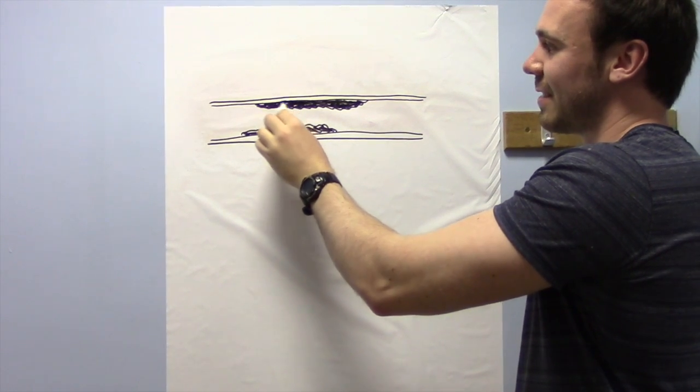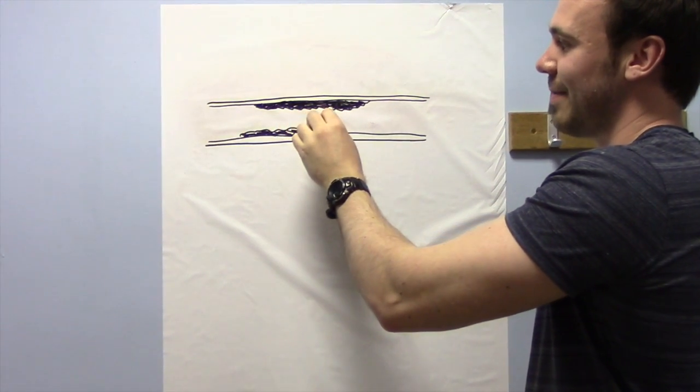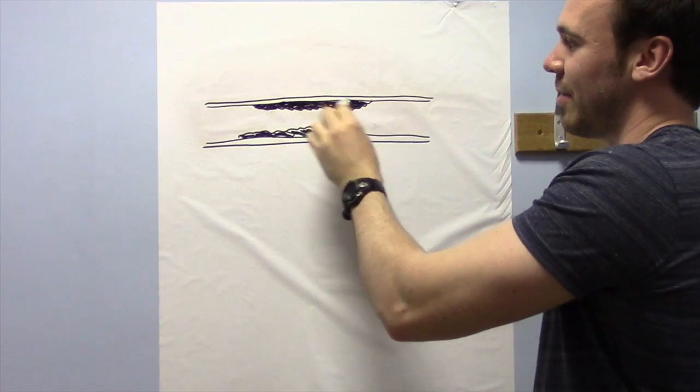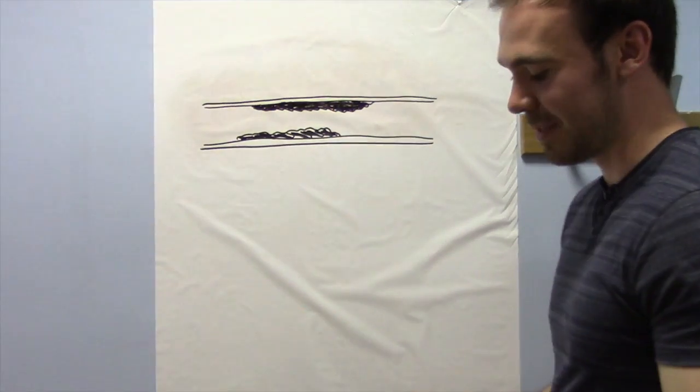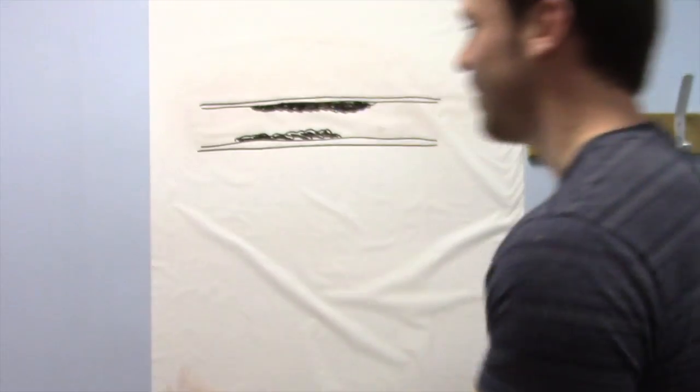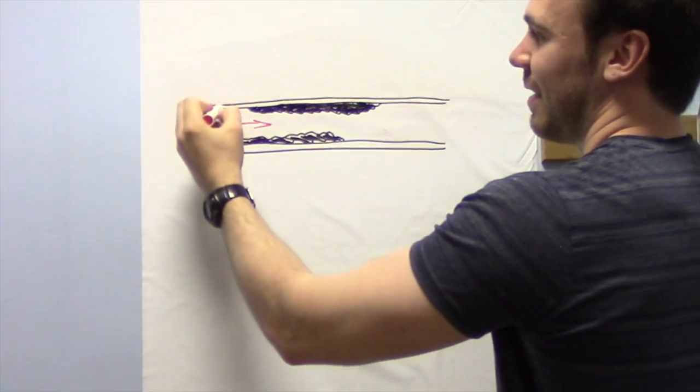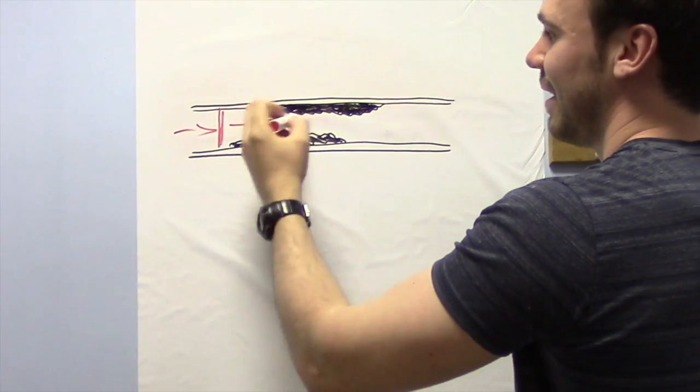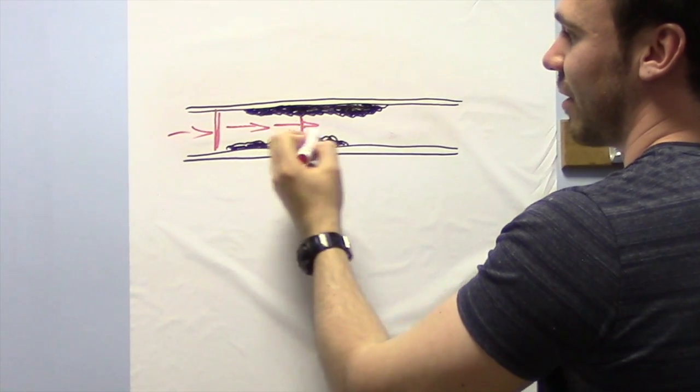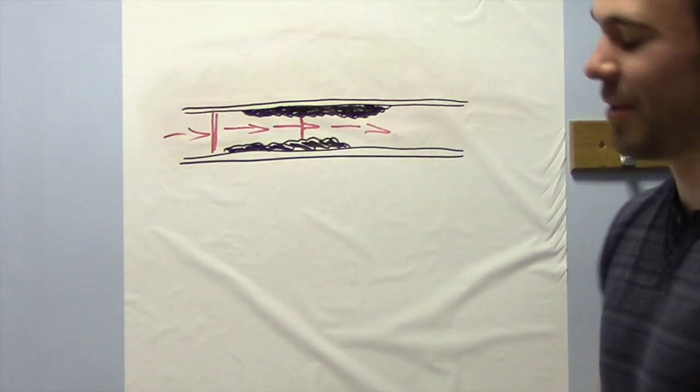So these plaques can grow over time. And basically what they do is they just restrict the blood supply again. So if the heart is pumping blood through the arteries, as you can see there's more space here than there is here. So this is going to cause extra strain on the heart as it pumps through.